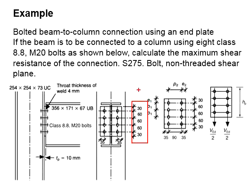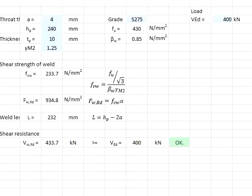30, 60, 60, 60, and 30. That gives you a total of 240 mm, and the effective length will be 240 minus 2A.